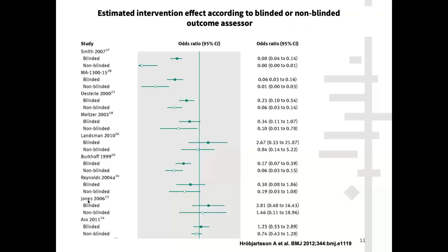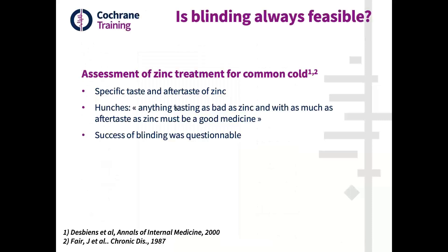Another very interesting meta-epidemiologic study was published by Ashton Robinson in the BMJ in 2012, focusing only on binary outcomes. This study included only randomized controlled trials that evaluated outcomes in two different ways for the same patients: by blinded outcome assessment and by unblinded outcome assessment. As shown in the figure — blinded assessment in dark, unblinded in white — there was almost systematically an overestimation of treatment effect with unblinded assessment. These are good empirical evidence of the importance of blinding in randomized controlled trials.